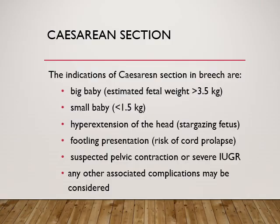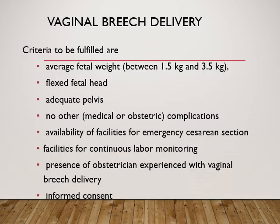Indications of caesarean section in breech presentation include: big baby — estimated fetal weight over 3.5 kg; small baby — less than 1.5 kg; hyperextension of the fetal head (which is why we look for attitude of the fetal head on sonography); footling presentation due to maximum risk of cord prolapse; suspected pelvic contraction; severe IUGR; or any other associated complications.